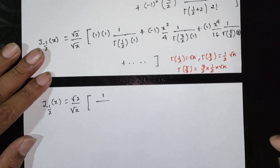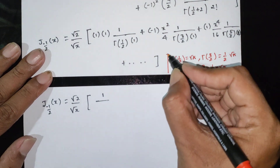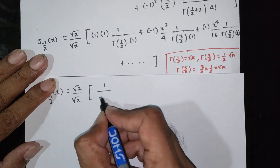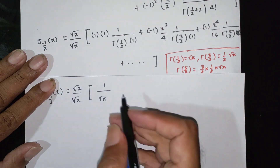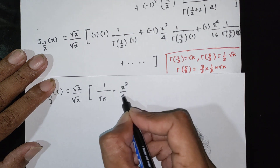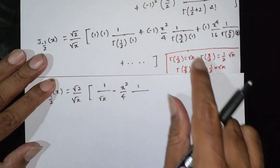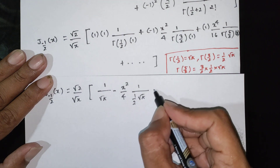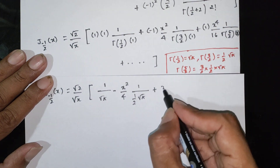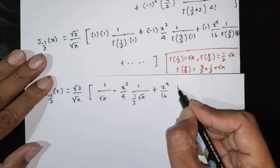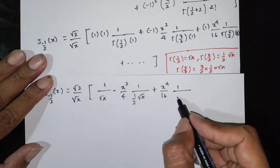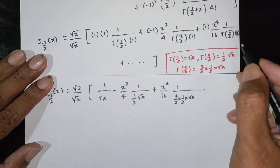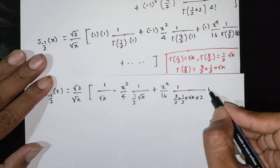Substituting these values, J₋₁/₂(x) equals √(2/x) times: 1/(√π) minus x²/4 · 1/(½√π · 1!) plus x⁴/16 · 1/(3/2 · 1/2 · √π · 2!) plus dot dot dot. Factoring out 1/√π gives √(2/x) · (1/√π) times the series.